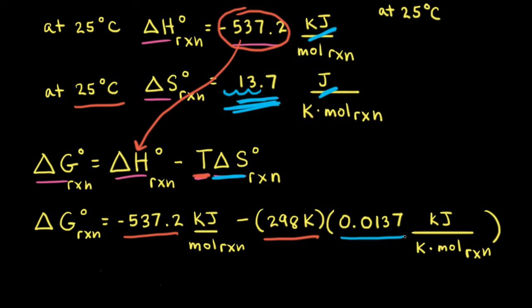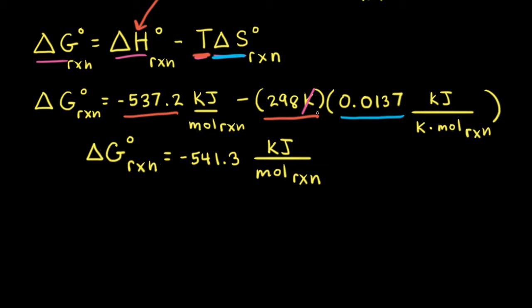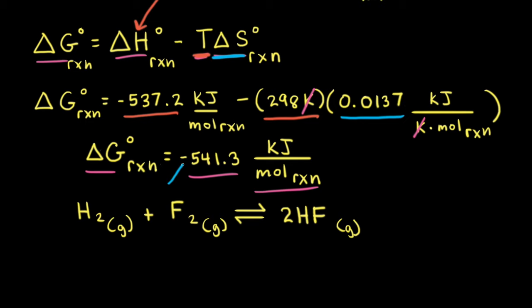Looking at our units, Kelvin cancels out, giving us kilojoules per mole of reaction. When we do the math, delta G naught for this reaction equals negative 541.3 kilojoules per mole of reaction. Since delta G naught is negative, the forward reaction is thermodynamically favored. Since we calculated delta G naught, the reactants and products are in their standard states — meaning if we had a mixture of hydrogen gas, fluorine gas, and hydrogen fluoride gas at 25 degrees Celsius with each gas at a partial pressure of one atmosphere, the forward reaction is thermodynamically favored, and hydrogen gas and fluorine gas would come together to make more hydrogen fluoride.